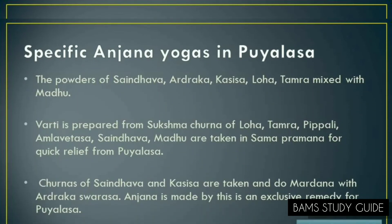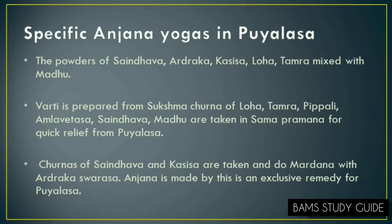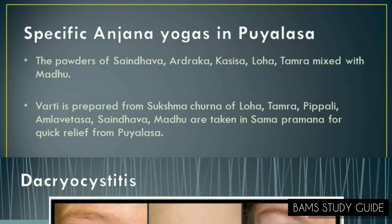That means Sainthava, Ardraka, Kasisa, Loha and Tamra should be made into Churna, mixed with Madhu, and applied. Indu, the commentator of Ashtanga Sangraha, told that if Pooyalasa is not subsided by the above treatment, Agni Karma should be done.